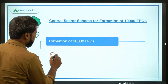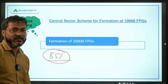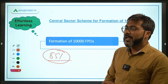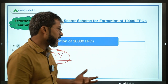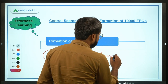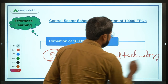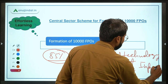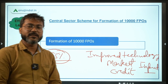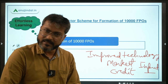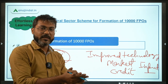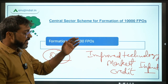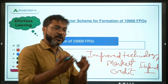Around 85-86% of farmers in our country are small and marginal farmers who are deprived of various things. They do not have access to improved technologies, markets, credit, or efficient inputs — all of which are required for efficient agriculture. So the government decided to form groups of these farmers into organizations called Farmer Producer Organizations, which will then be provided support by the Government of India.